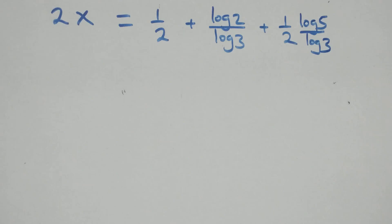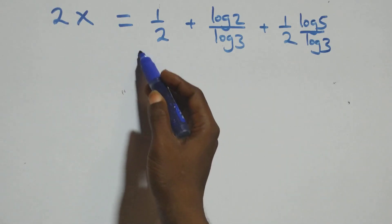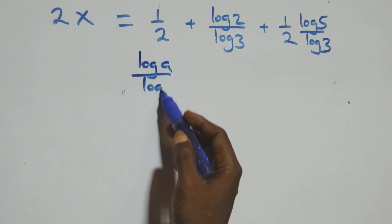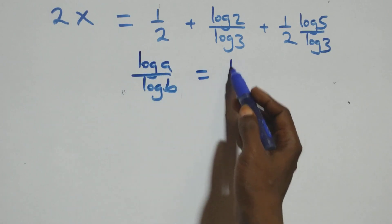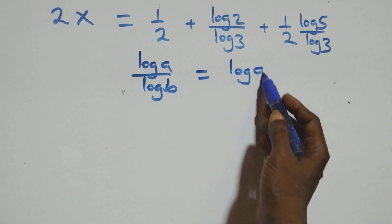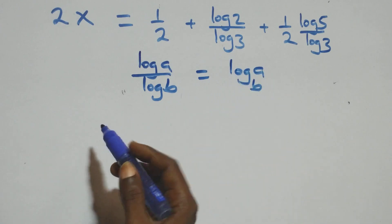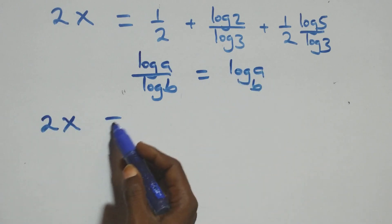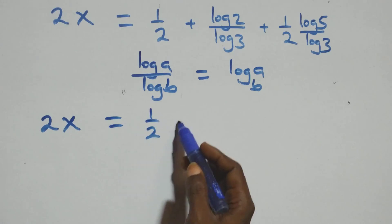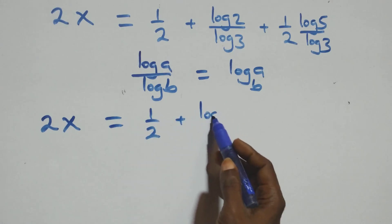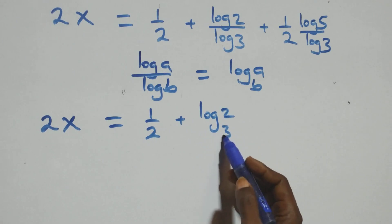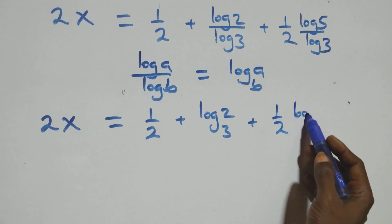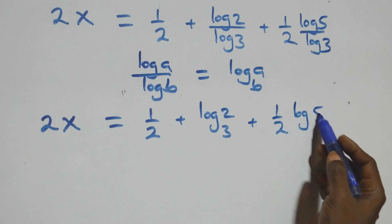Applying the change of base formula — log a over log b is the same thing as log a to base b — we have 2x equals to 1 over 2 plus log 2 base 3, plus 1 over 2 times log 5 base 3.